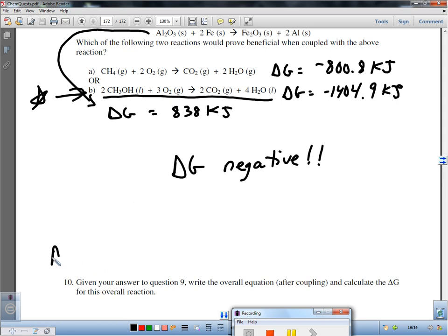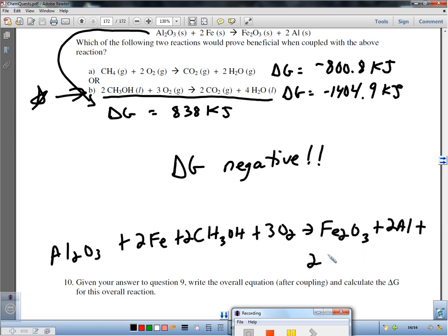Well, I'm going to put that right up here. It would be Al2O3 plus 2Fe plus 2CH3OH plus 3O2. That's a lot of stuff. Yield Fe2O3 plus 2Al plus 2CO2 plus 4H2O. For a total, grand total, delta G, which is a negative we know, but it will be negative 566.9 kilojoules. And that, my friends, is the gist of Gibbs free energy.